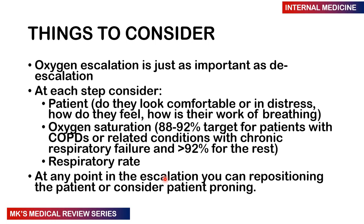This video focuses mainly on escalation of oxygen. At each step, I'll give you the basic details to follow, using a model patient with a respiratory illness such as COVID-19. There are three things to consider: first, the patient — is the patient comfortable? Are they in distress? Signs of distress include nasal flaring, use of accessory muscles of respiration, increased respiratory rate, and increased work of breathing. A good way to assess this is to try and match the patient's respiratory rate.